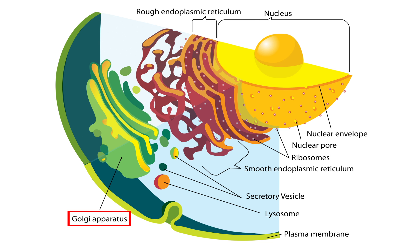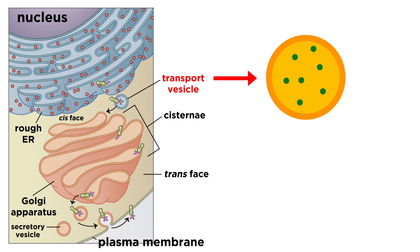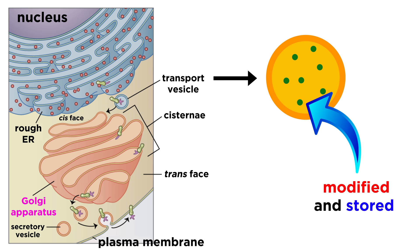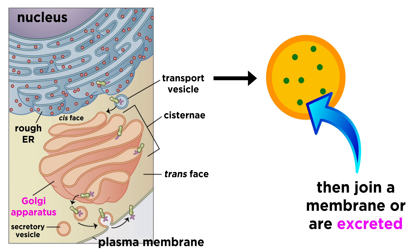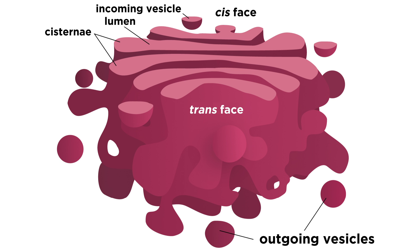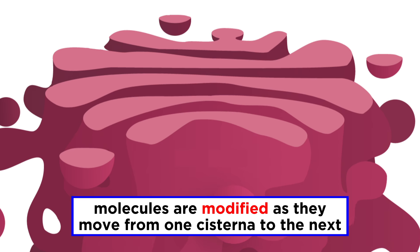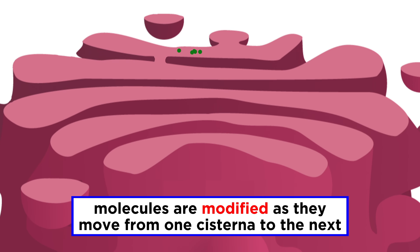Next in the endomembrane system is the Golgi apparatus. Most transport vesicles, like the ones going from the ER to the cell membrane, stop off here first. The things inside the vesicles, like proteins, are modified and stored, and later sent to where they need to go. The Golgi apparatus consists of a series of stacks, and there is a cis face, usually facing the ER, where vesicles arrive, and a trans face, where vesicles leave. In between, molecules will be modified, with sugars removed or substituted, and generally prepared for their eventual function. This is all done piecewise as the components move from one cisterna to the next, as each of these sections has its own set of enzymes.